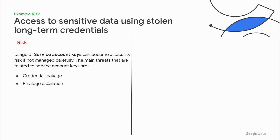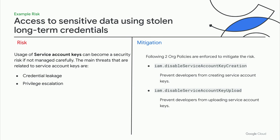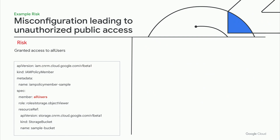The first risk is usage of service account keys, which can be a security risk if not managed carefully. The main threats are credential leakage or privilege escalation by a malicious actor. To mitigate this, we enforce two org policies which prevent developers from creating or uploading service account keys. The next risk is misconfiguration leading to unauthorized public access — for example, accidentally adding an IAM policy member that would open up a bucket to the entire world.